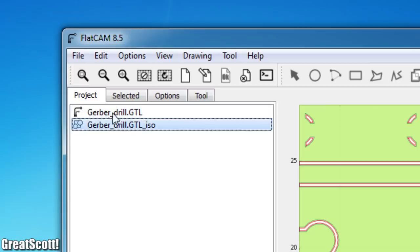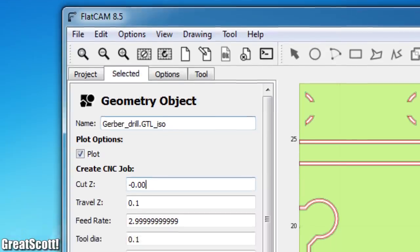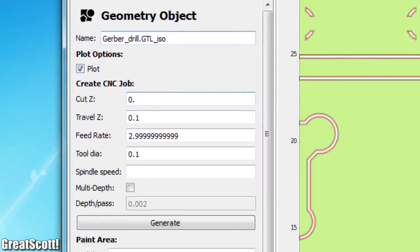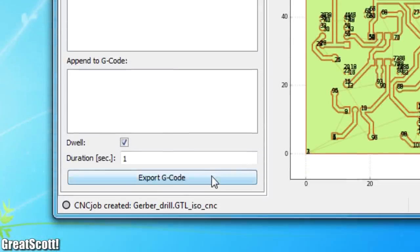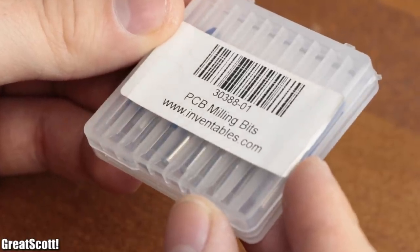The newly created project file now shows through the red lines where the bit will remove the copper. So once again, after switching to the selected tab, I changed the Z cut depth to around 0.05, the travel Z height to 3, the feed rate to 80, the tool diameter to 0.1, and clicked on generate. With that being done, I exported the G-code and had a closer look at the available milling bits.